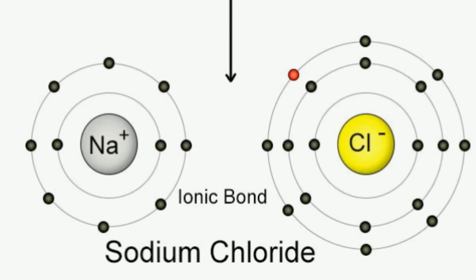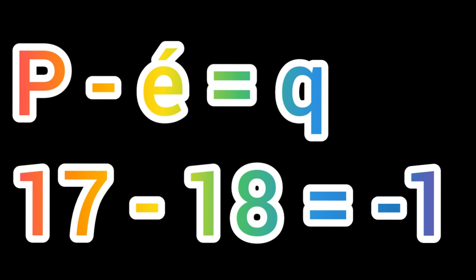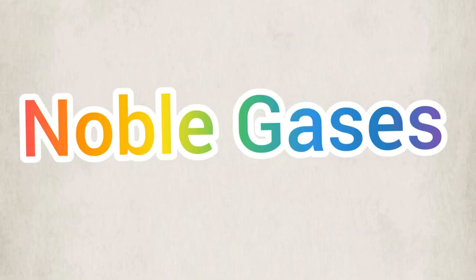To find chlorine's charge: 17 (number of protons) minus 18 (number of electrons) gives us a charge of minus one. This is the total charge for chlorine. Now, all about these guys in the last group.